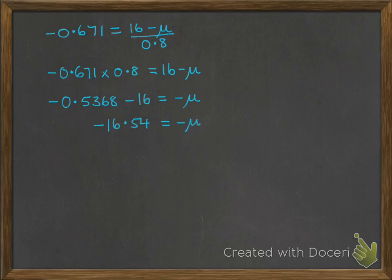Put those things together, and we get minus 16.54 is equal to minus μ, which of course means that μ is equal to 16.54. So the mean score that Alfie gets on internals is 16.54.